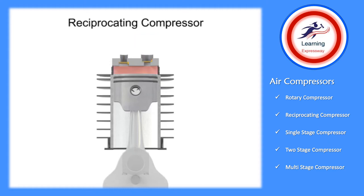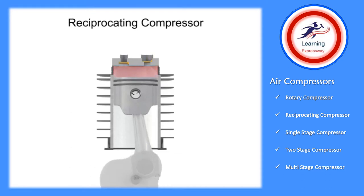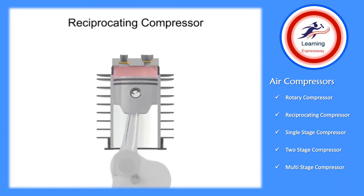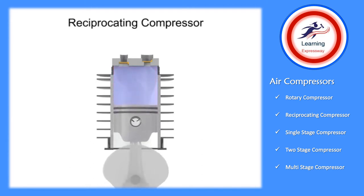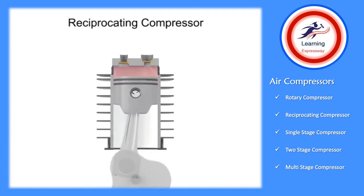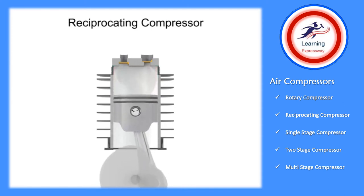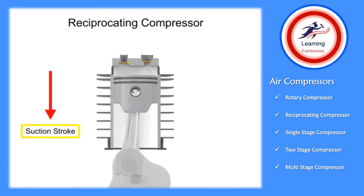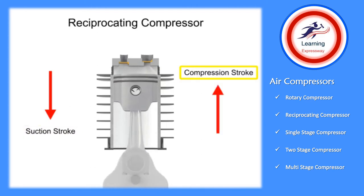As the crankshaft turns, the piston lowers and raises, changing the available volume within the cylinder. The downward stroke of the piston is called the suction stroke. The upward stroke is called the compression stroke.